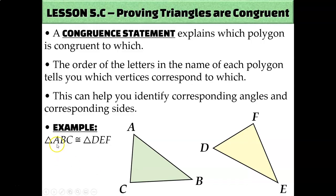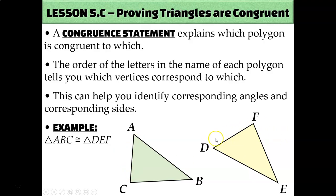You can also pair up the letters to decide which sides are congruent. A and B are the first two letters, and D and E are the first two letters, so side AB is congruent to side DE. B and C are last, E and F are last, so BC is congruent to EF. And A and C are first and last, D and F are first and last, so side AC and side DF correspond and therefore are congruent.